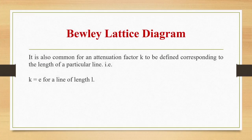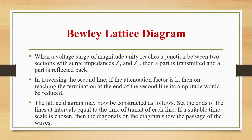It is common for an attenuation factor K to be defined corresponding to the length of a particular line, that is K = e^(−αL) for a line of length L. When a voltage surge of magnitude unity reaches a junction between two sections with surge impedances Z1 and Z2, a part is transmitted and a part is reflected back. In traversing the second line, if the attenuation factor is K, then on reaching the termination at the end of the second line, its amplitude is reduced.